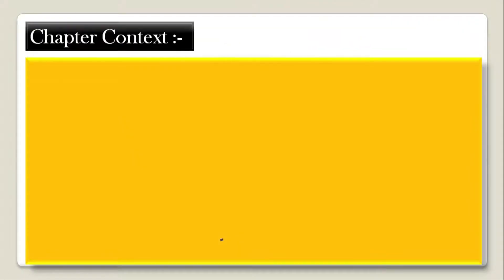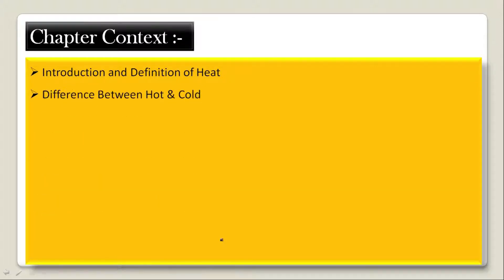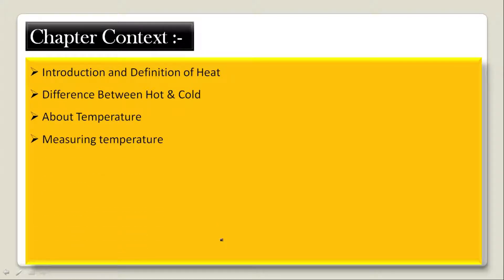In all the previous lectures we had seen some topics: the first was introduction and definition of heat, in which we saw what heat is and how it is defined. The second was difference between hot and cold. The third was about temperature. The fourth was measuring temperature, in which we saw that a device used to measure temperature is known as a thermometer.